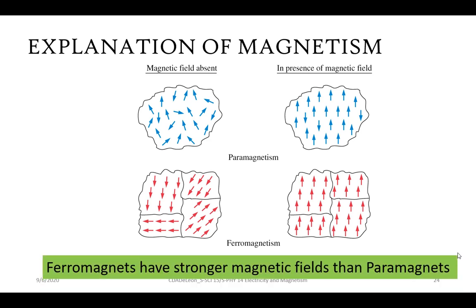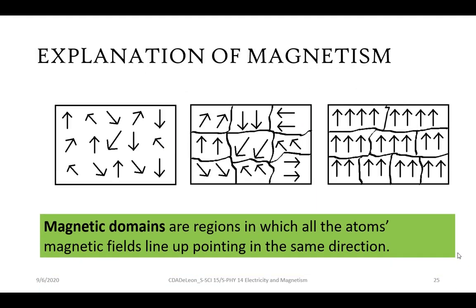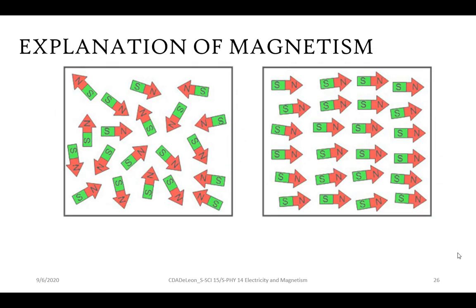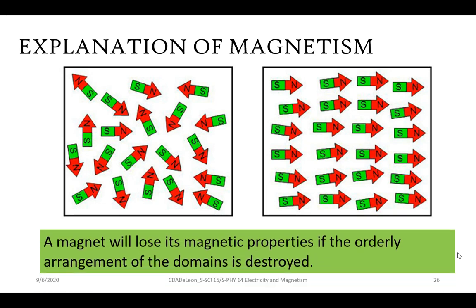Ferromagnets have stronger magnetic fields than paramagnets. The magnetic domains are regions in which all the atoms' magnetic fields line up pointing in the same direction. A magnet will lose its magnetic properties if the ordered arrangement of the domains is destroyed.